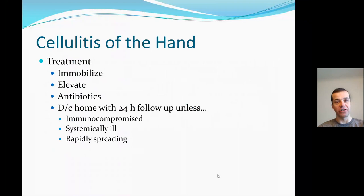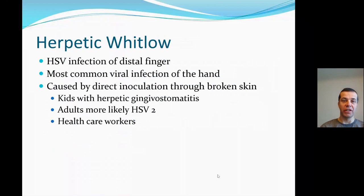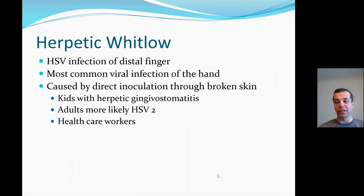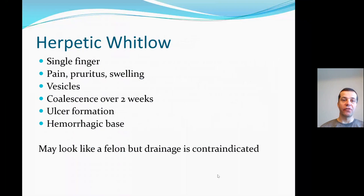Herpetic whitlow is the most common viral infection of the hand, although still relatively rare. It's important to distinguish it from eponychia. It's caused by direct inoculation through broken skin and is more common in younger people and kids with herpetic gingival stomatitis. In adults it's most commonly herpes simplex virus type 2, and it's also more common in healthcare workers. It generally affects a single finger. Symptoms are pain, pruritus, and swelling. Over time, the patient will develop vesicles that coalesce over the first one to two weeks, resulting in ulcer formation with a hemorrhagic base. It may look like a felon, but drainage of a herpetic whitlow lesion is contraindicated.